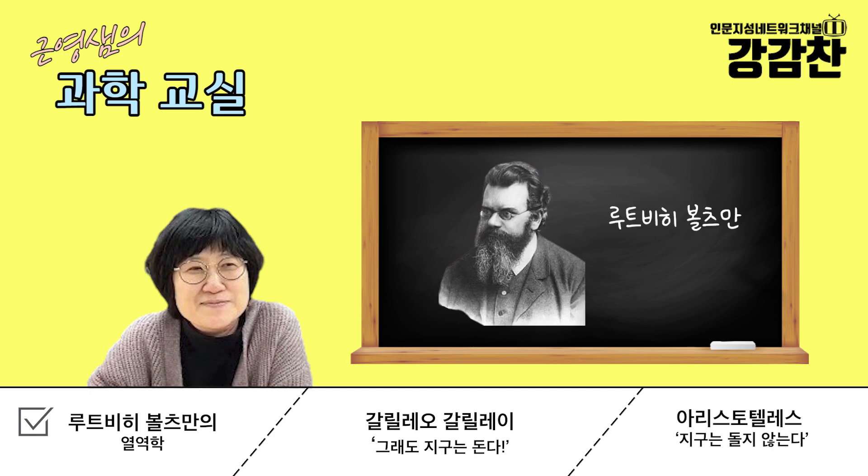루트비히 볼츠만이라고 하는 사람이 나옵니다. 어떻게 인식의 지도가 바뀌고 있는지가 중요해서 설명드릴게요. 볼츠만은 1844년부터 1906년 사람이거든요. 1844년은 니체가 태어난 해와 같습니다.